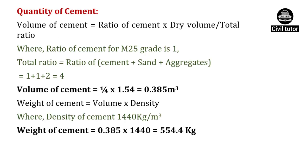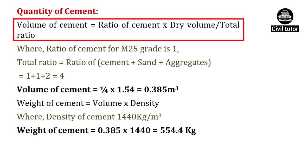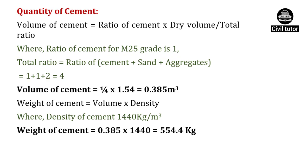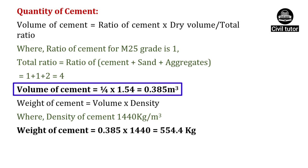Volume of cement will be equal to ratio of cement upon total ratio into dry volume. The ratio of cement for M25 grade of concrete is 1, and total ratio equals ratio of cement plus ratio of sand plus ratio of aggregates, which equals 4. Substituting these values, volume of cement equals 1/4 into 1.54, which gives 0.385 meter cube.